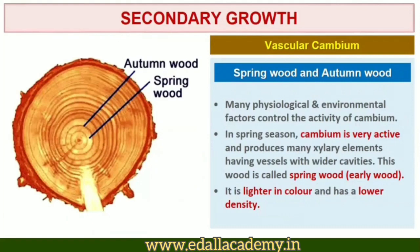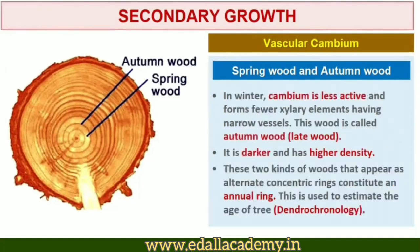Compare spring wood and autumn wood. The activity of cambium is under the control of many physiological and environmental factors. In temperate regions, climatic conditions are not uniform through the year. In spring, cambium is very active and produces a large number of xylary elements with wider vessels — this wood is called spring wood or early wood. In winter, cambium is less active and forms fewer xylary elements with narrow vessels — this is called autumn wood or late wood.